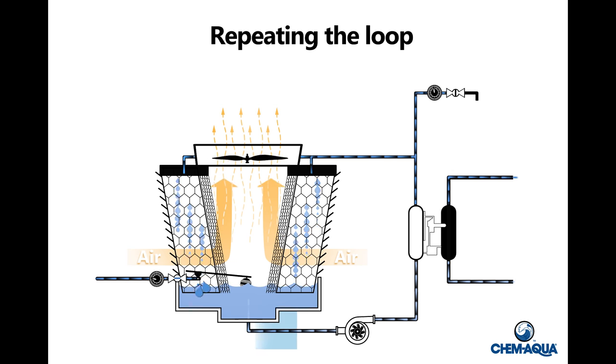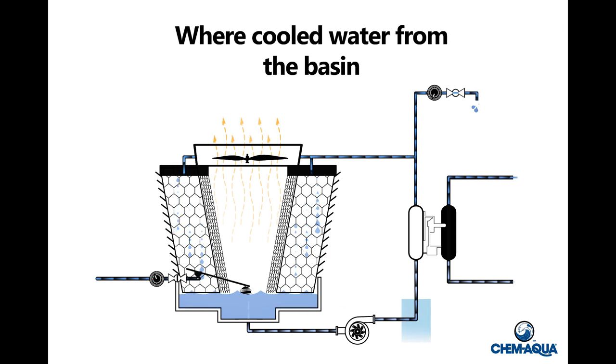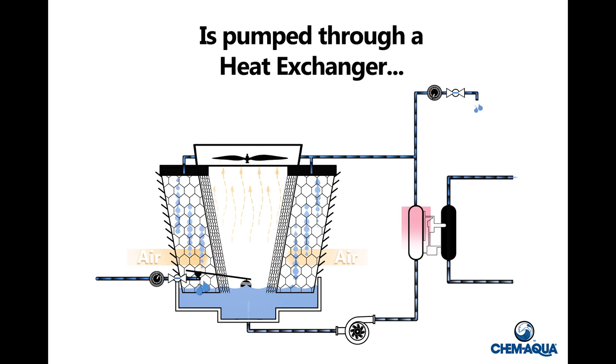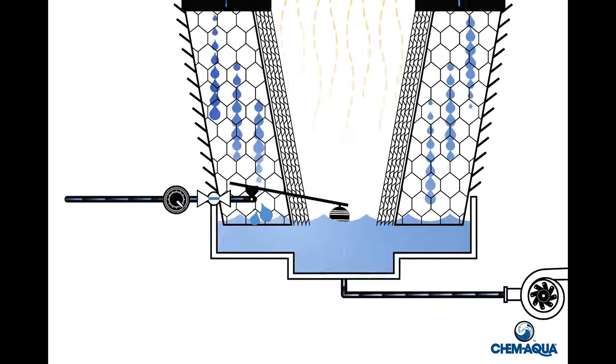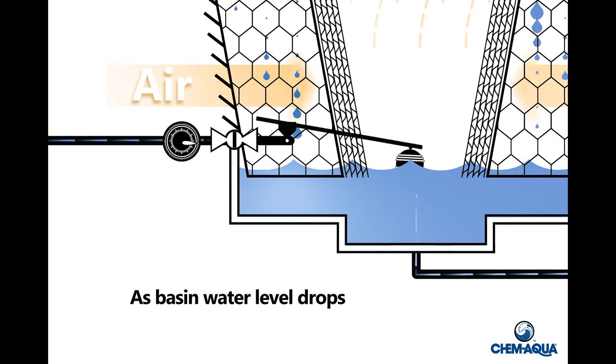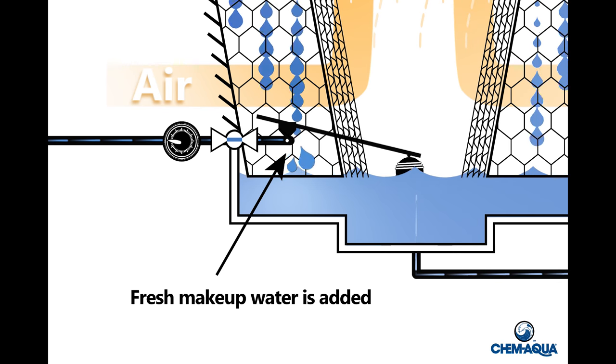Repeating the loop, where cooled water from the basin is pumped through a heat exchanger, and so forth. As the basin water level drops, fresh makeup water is added.